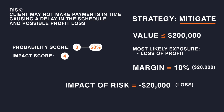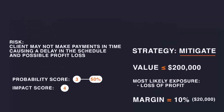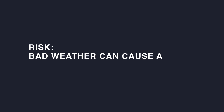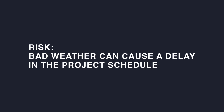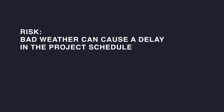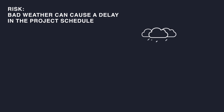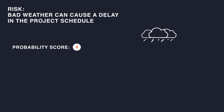We continue with this approach by translating our probability score to a percentage and by assigning a monetary value to each risk if the impact were to occur. Let's use another risk in our construction project as an example — the risk that bad weather can cause a delay in the project schedule. For the sake of this example, let's assume you are building during the rainy season, so you gave this risk a probability rating of 4, which will equate to a 75% probability.